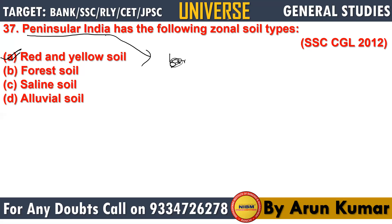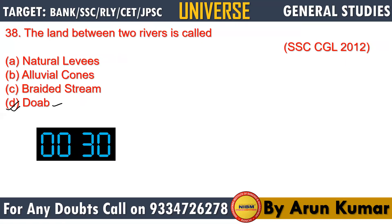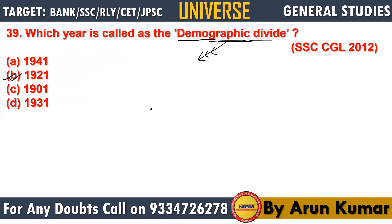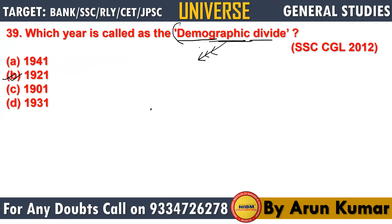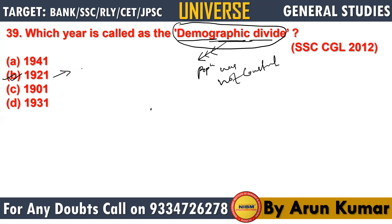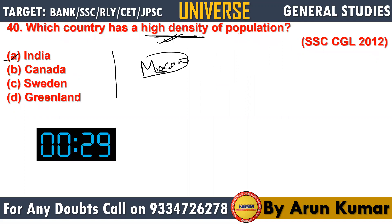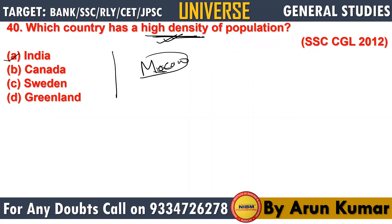Regarding demographic divide — it is basically a year in which the population was not constant; sometimes it increased and sometimes it decreased. Before 1921 the growth scale of population was usually low, but after 1921 there has been considerable and constant increase in population. That is why 1921 is called the demographic divide. Now let's continue with our next topic, which is environment.